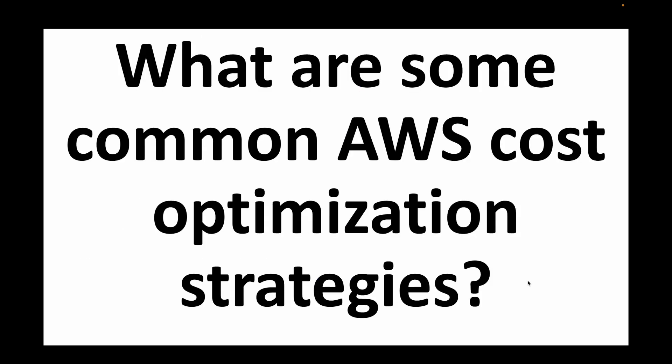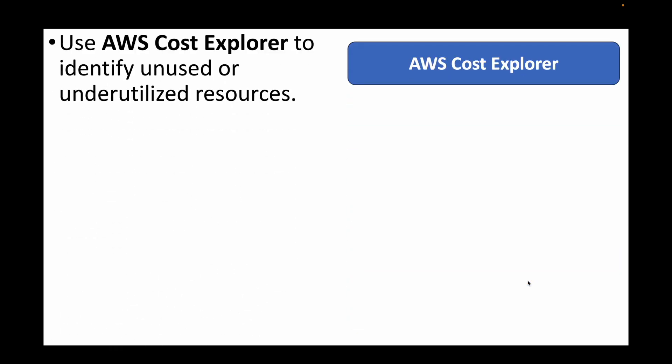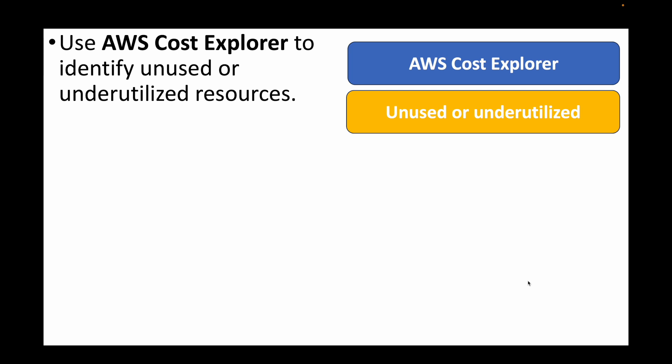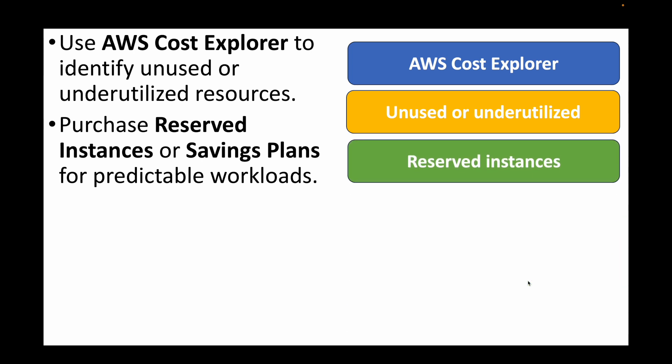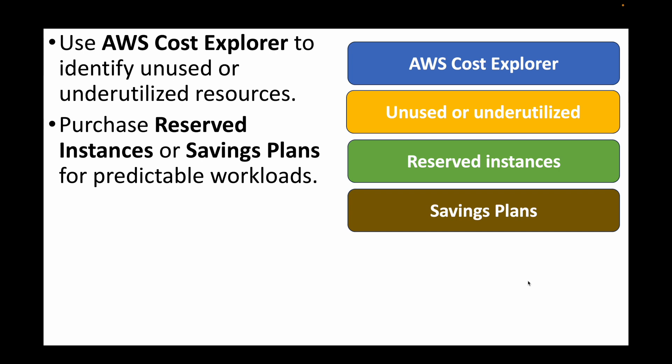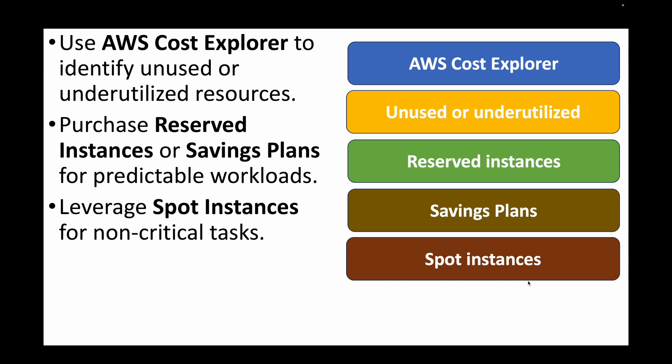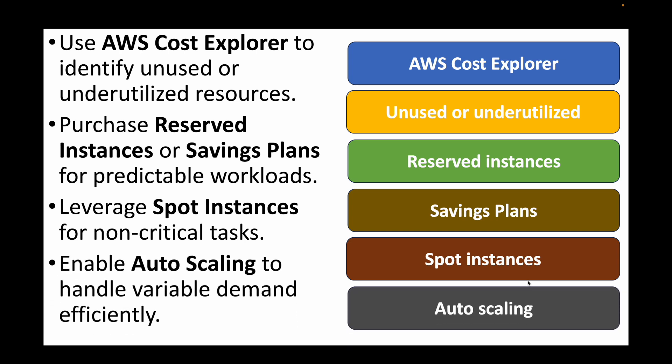The next question is: what are some common AWS cost optimization strategies? We can use AWS Cost Explorer to get a view of how usage and charges are occurring within AWS, and identify unused or underutilized resources. We can purchase reserved instances or savings plans for predictable workloads. We can also leverage spot instances for non-critical tasks. And we can make use of auto scaling groups to handle variable demand efficiently — launching instances when needed and terminating them when not.